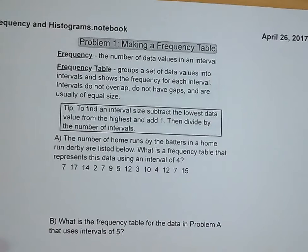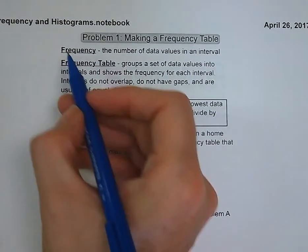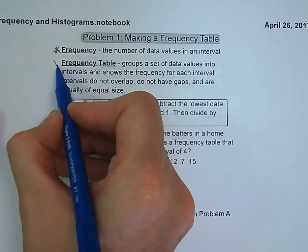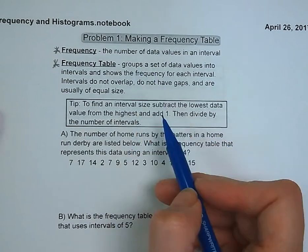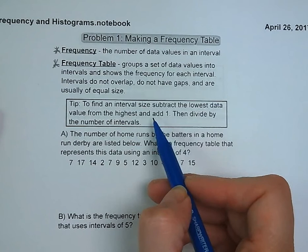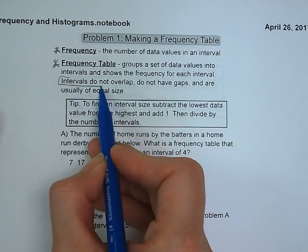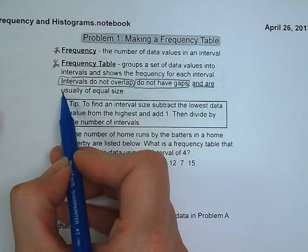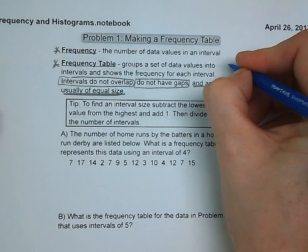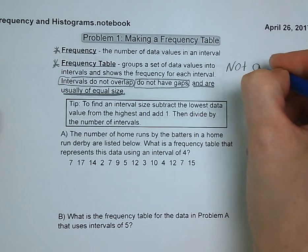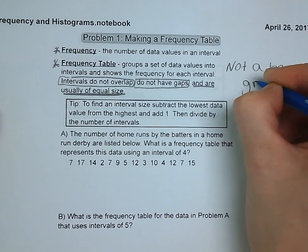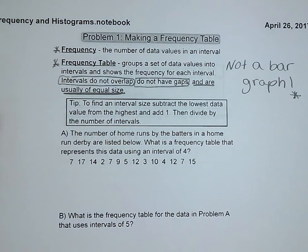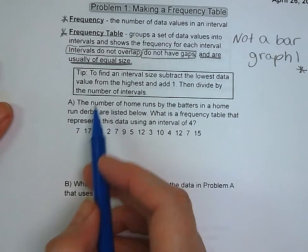Problem number one is making a frequency table. Frequency is the number of data values in any given interval. The frequency table groups the set of data values into intervals and shows the frequency of each. Intervals do not overlap, they do not have gaps, and they are of equal size. And when we get to histograms, they are not a bar graph.